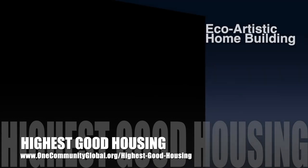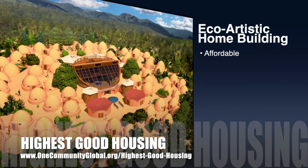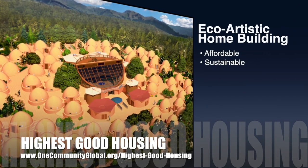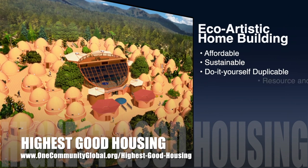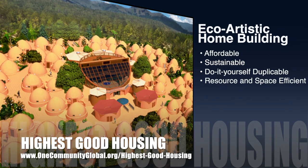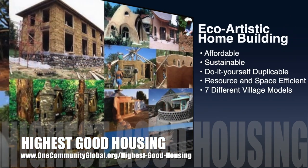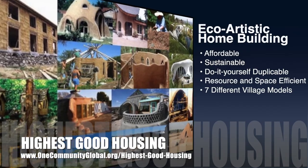The One Community approach to highest good housing is eco-artistic home building that is affordable, sustainable, do-it-yourself duplicable, resource and space efficient, and consists of seven different sustainably constructed village models.